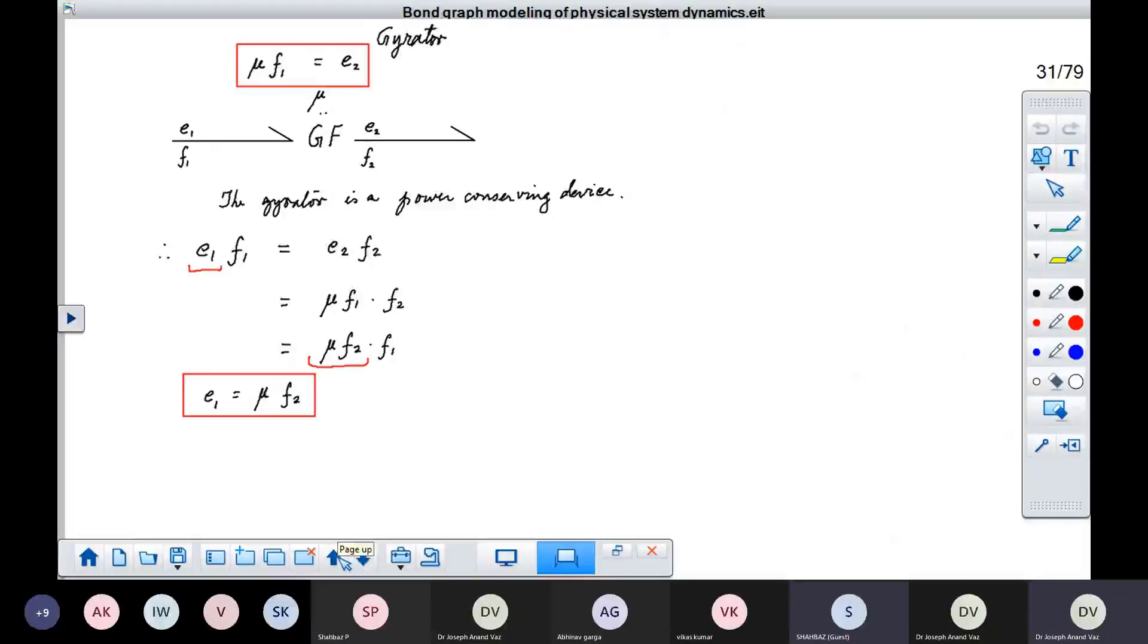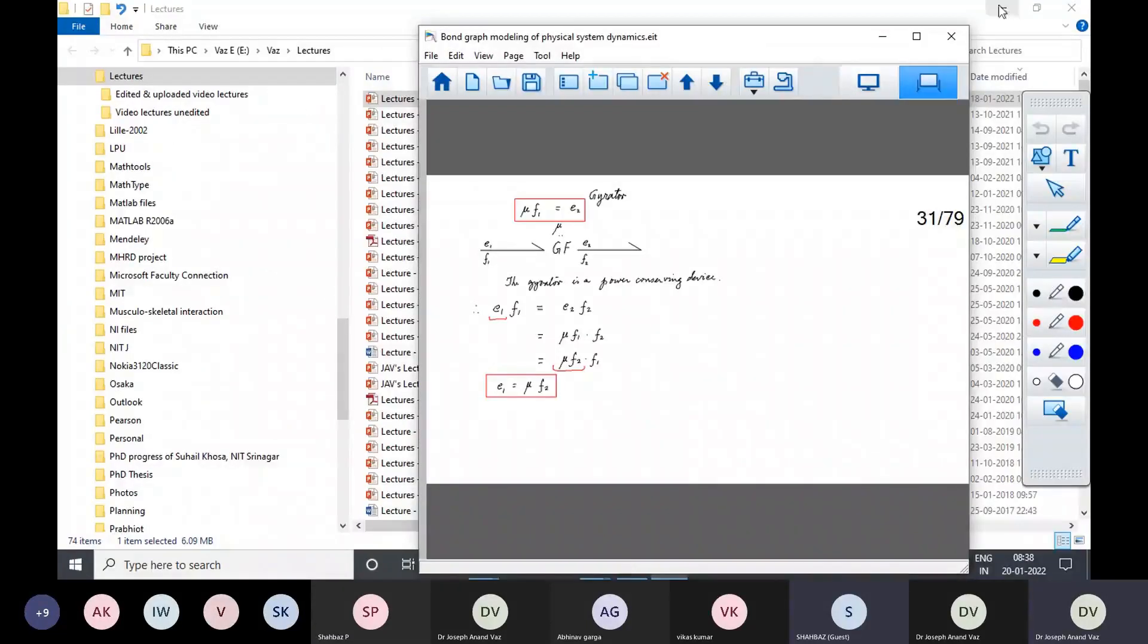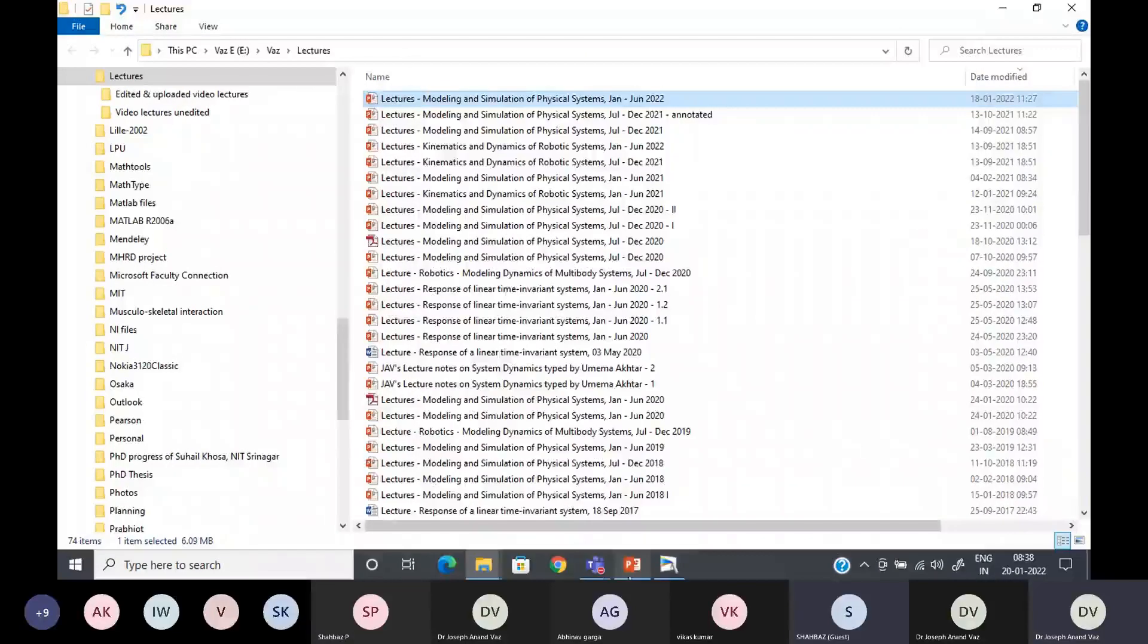The next element that we have is the gyrator. Now, just like the transformer, the gyrator also is a two-port element.